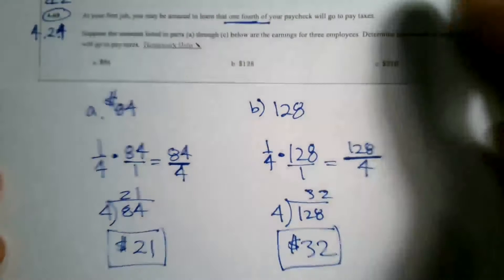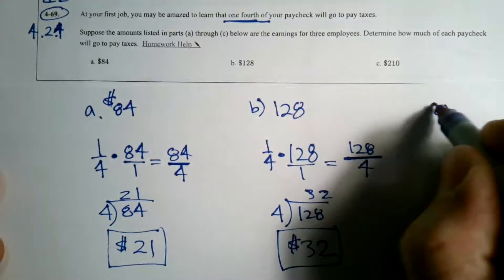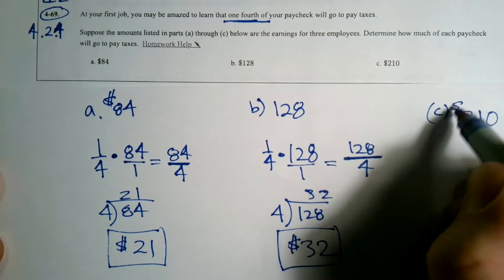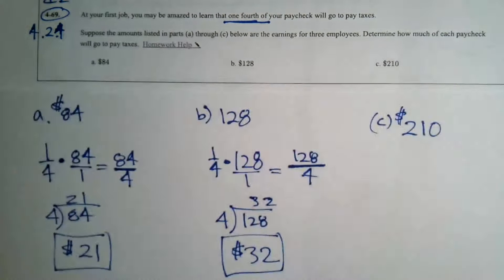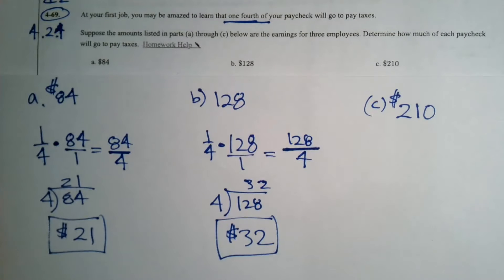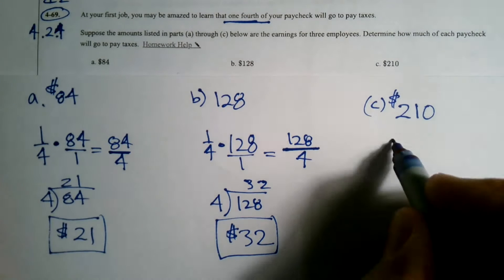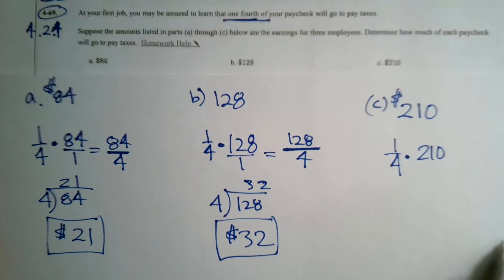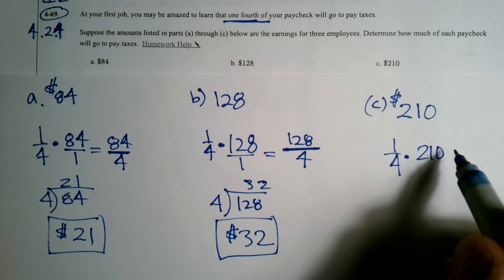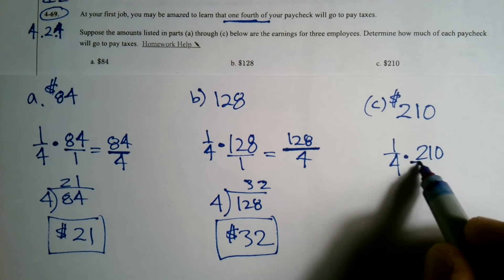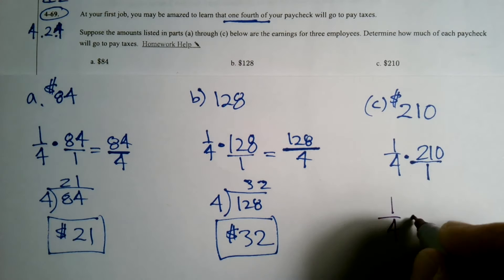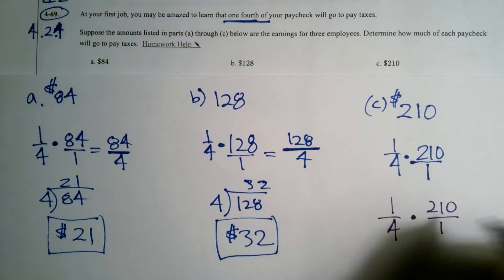Last one, 210. So C is $210 is the paycheck. How much of that goes to taxes? It's one fourth of 210. One of the things I want to point out too is when you're multiplying fractions, I'll show that as a little aside here. You can do something. Let me rewrite them. One fourth times 210 over one.